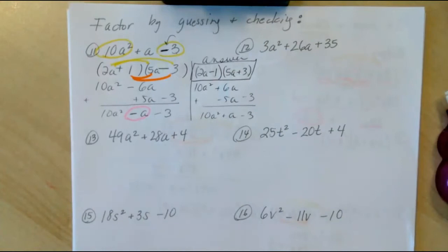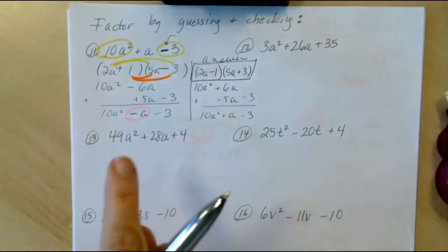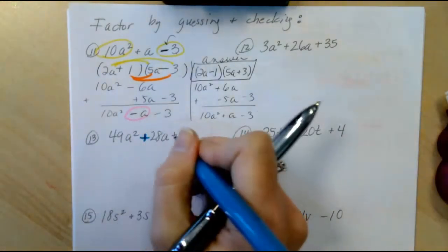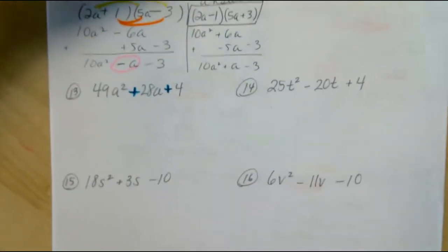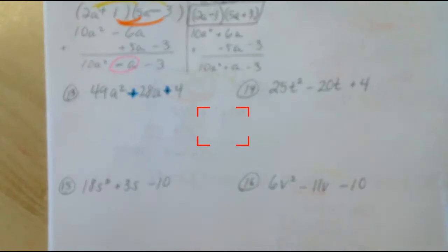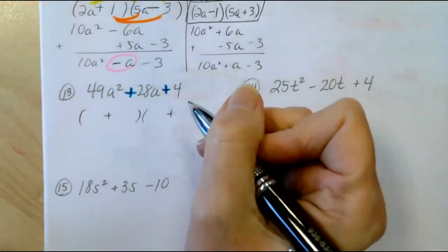All right, let's go down to number 13 underneath. We're going to do the same thing. First thing I see right away is that I have plus, plus, we love plus, plus, because that means there's going to be plus, plus in the factors. That is a given.